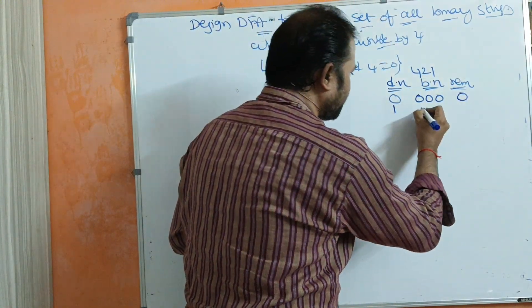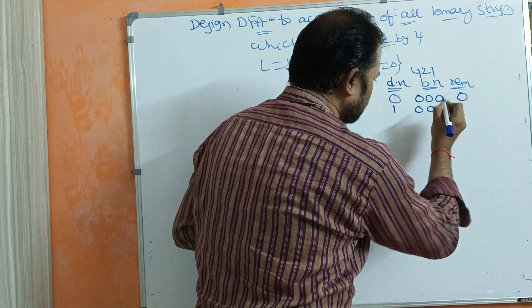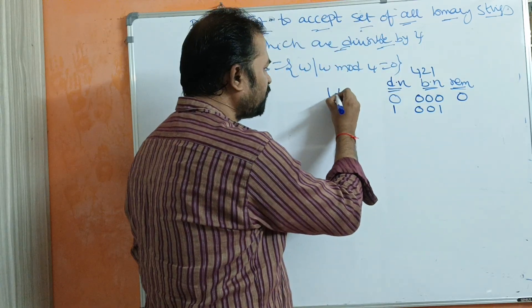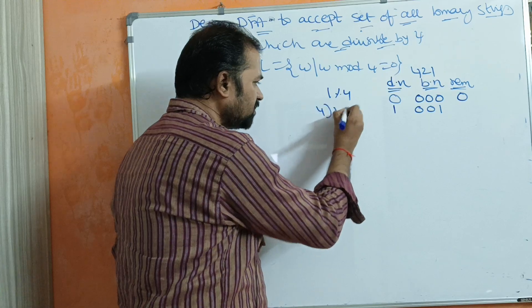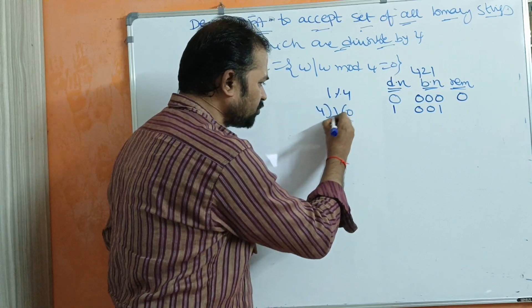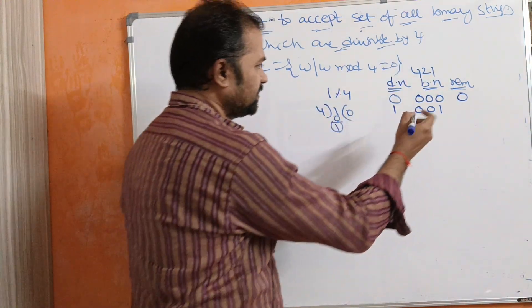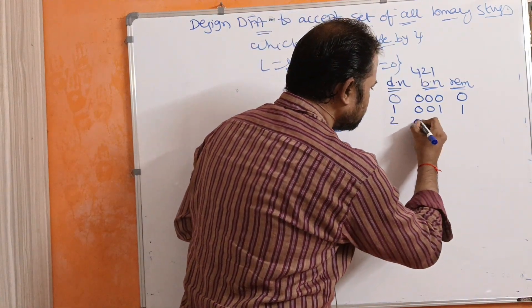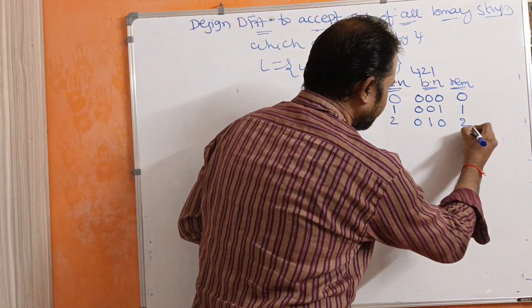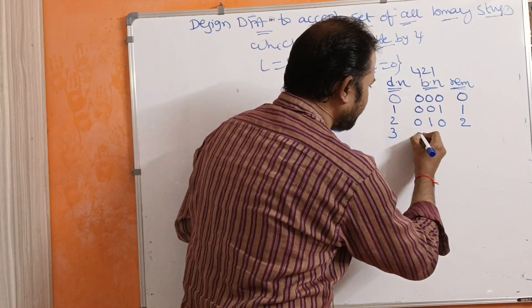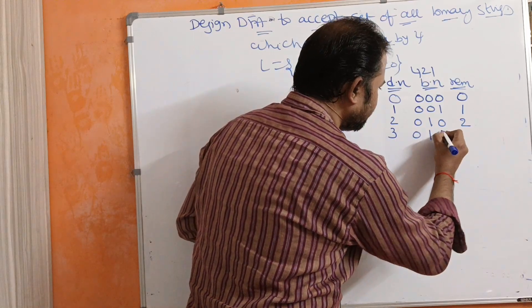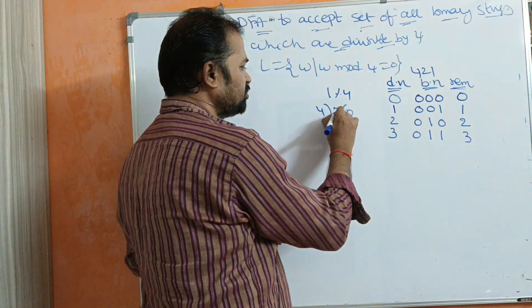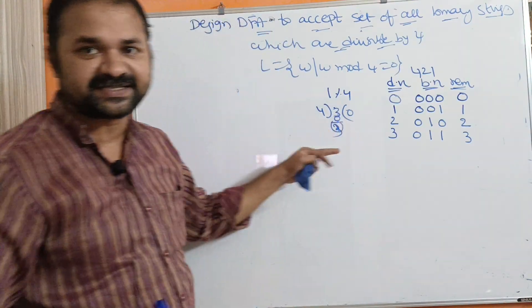Decimal number 1 can be represented as 001. 1 mod 4: 4 times 0 is 0, and 1 minus 0 is 1, so remainder is 1. For decimal 2, represented as 010, the remainder is 2. For decimal 3, represented as 011, the remainder is 3. 4 times 0 is 0, and 3 minus 0 is 3.